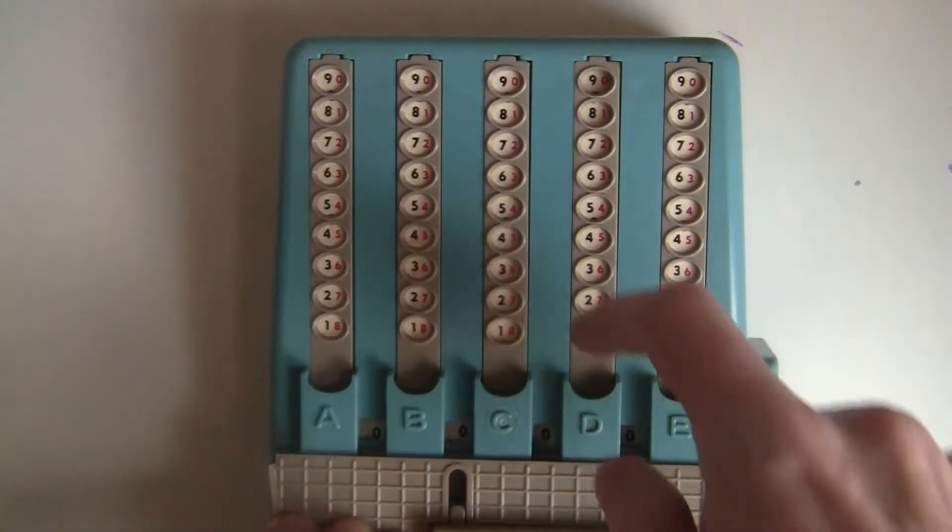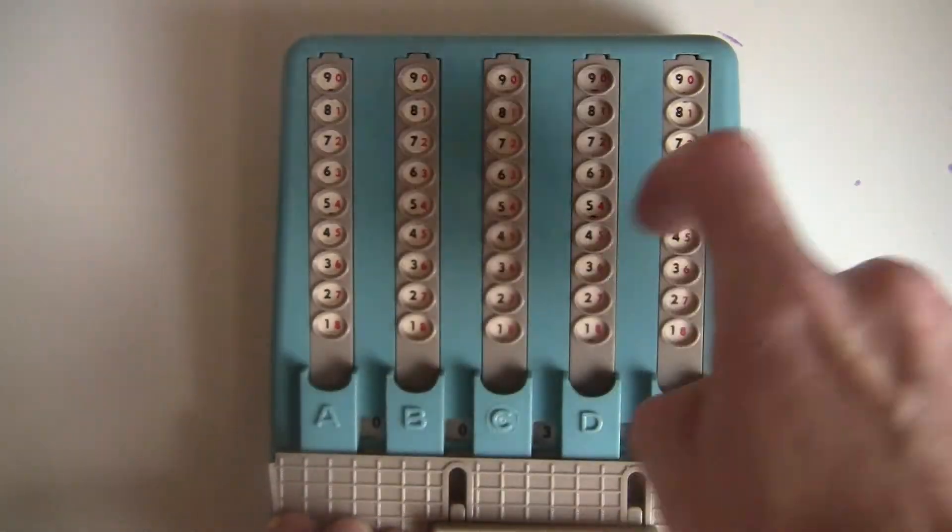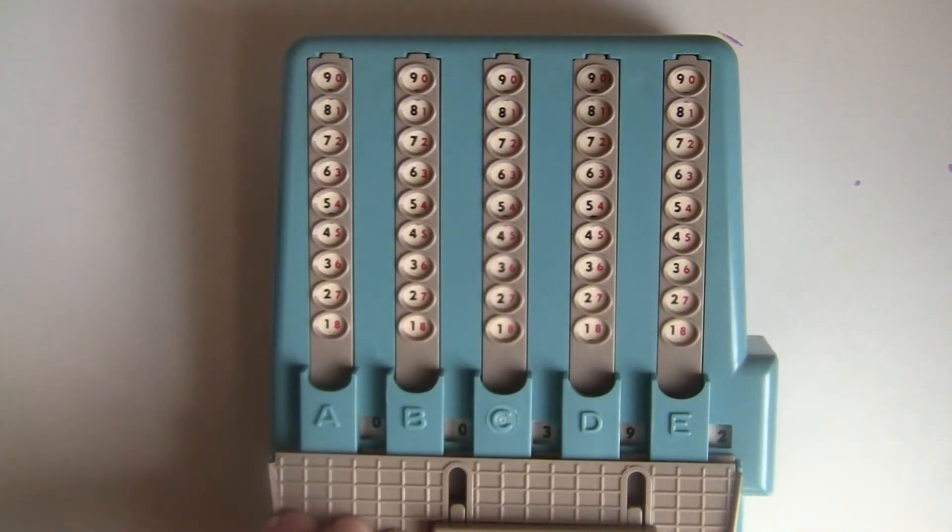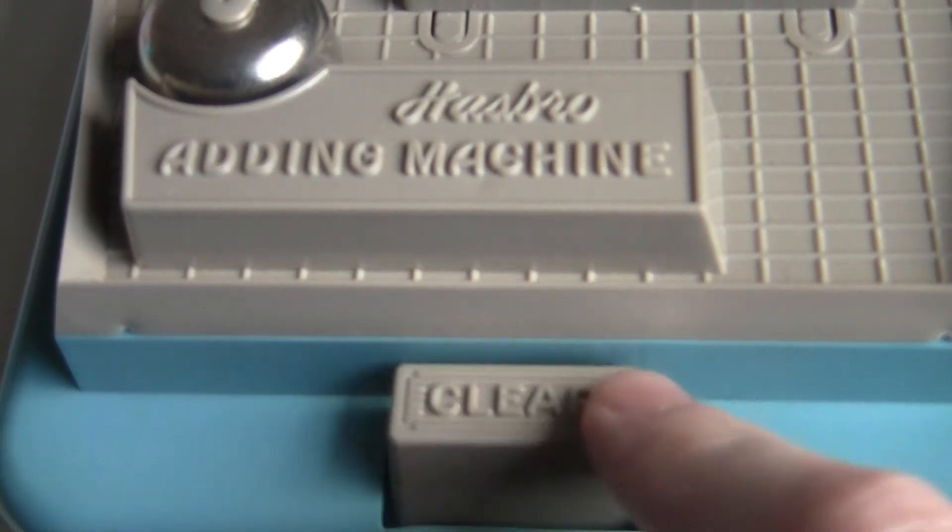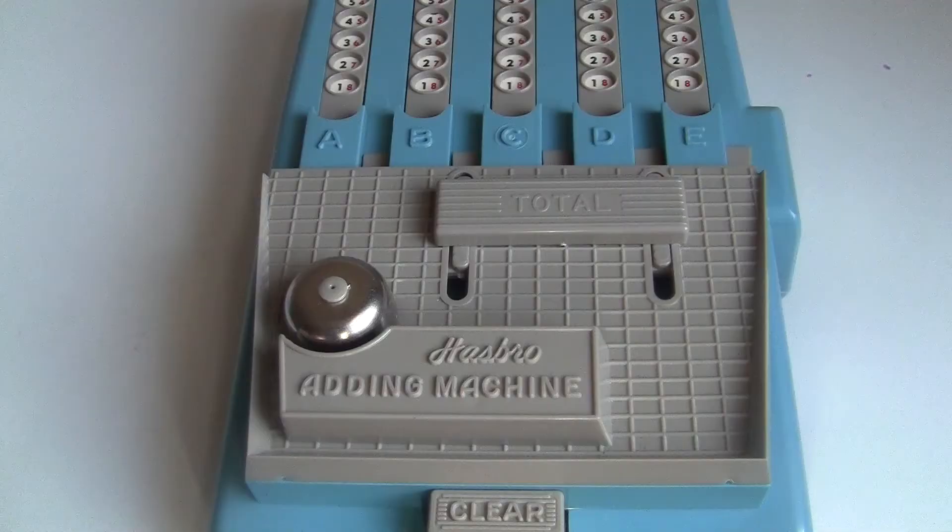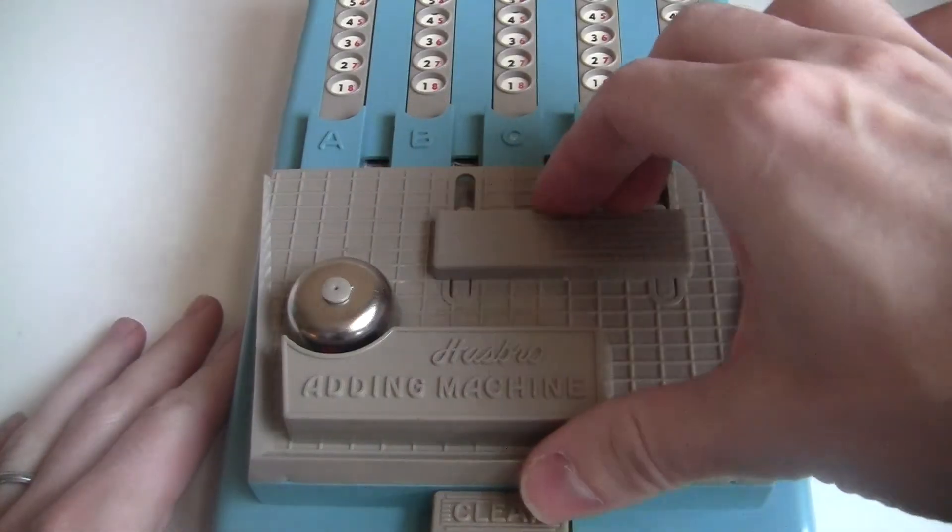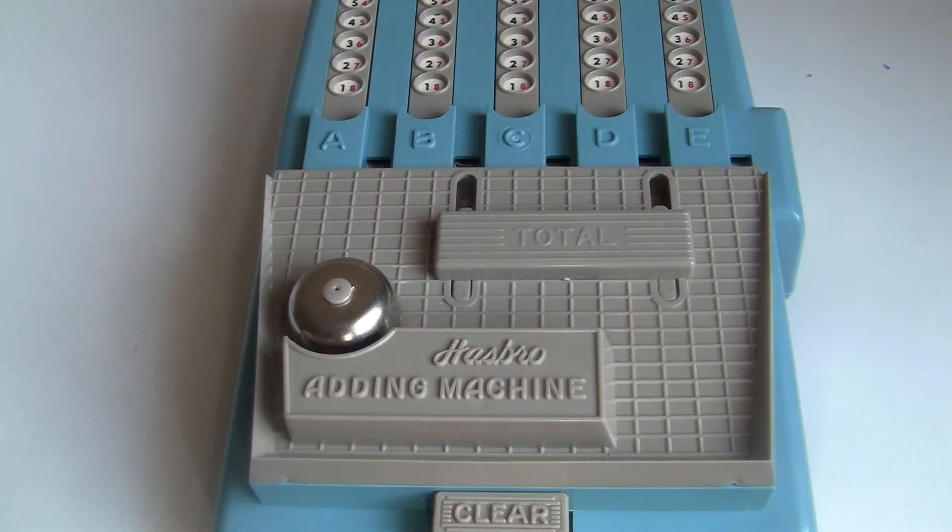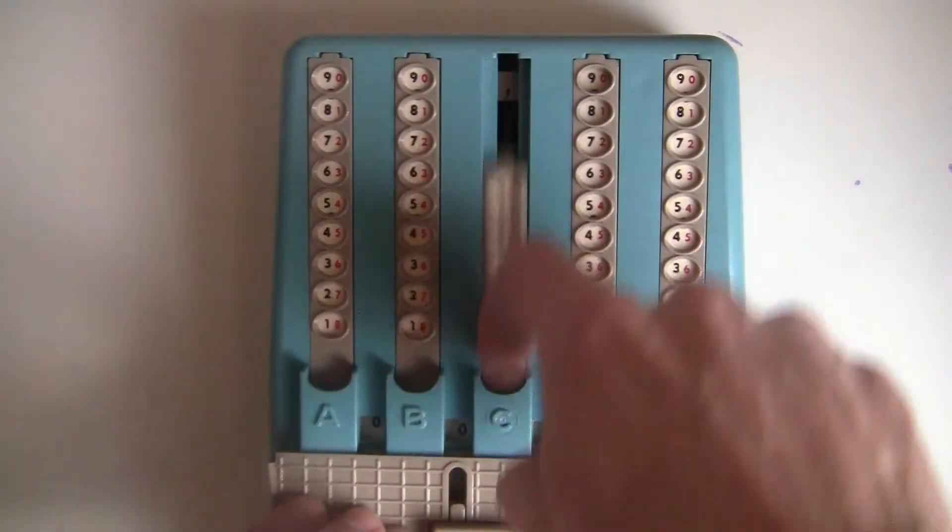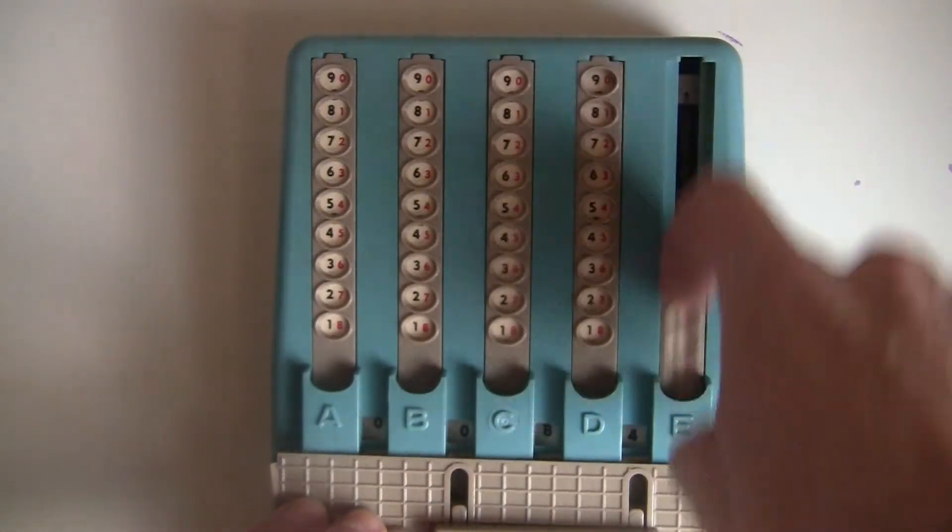The Hasbro one is flimsy plastic and it had lots of useless extra features. It had a silly clearing procedure and a useless totaling button with a dinging bell. Actually, I kind of like that bell. None of those extra things made the Hasbro any better. And it's much more likely to break.